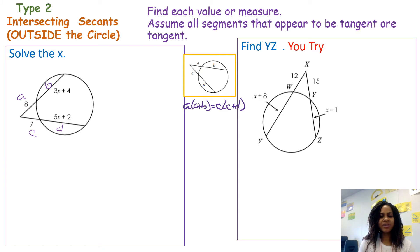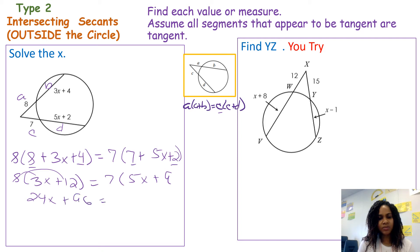That'll help me plug it in a little easier. So A times A plus B. A is 8 times A plus B, so 8 plus 3x plus 4. On the other side, we have C. C is 7 times C plus D, so that would be 7 plus 5x plus 2. Now I'm just going to simplify it. Simplify what's on the inside here, that is 3x plus 12. On the other side, 7 plus 2, that would be 5x plus 9. Distributive property, 24x plus 96 equals 35x plus 63.